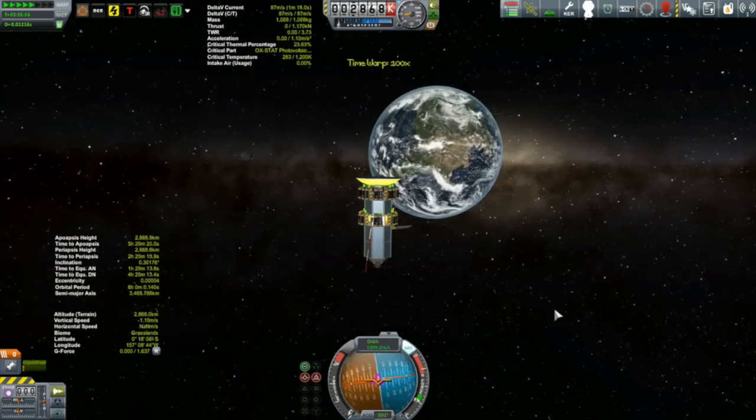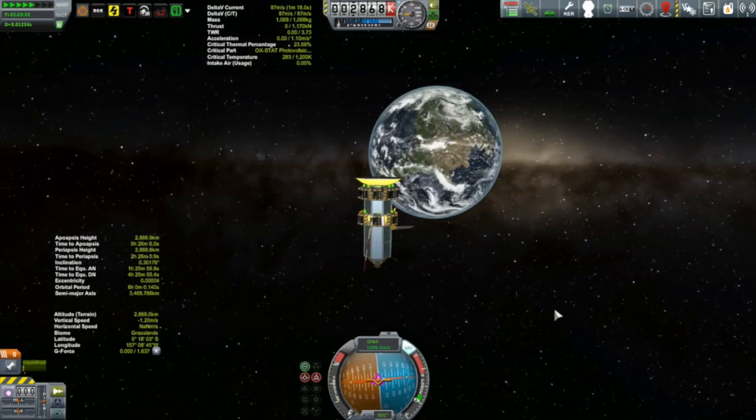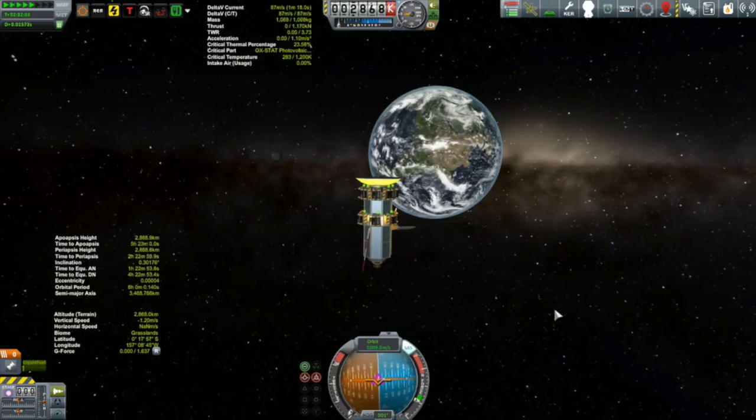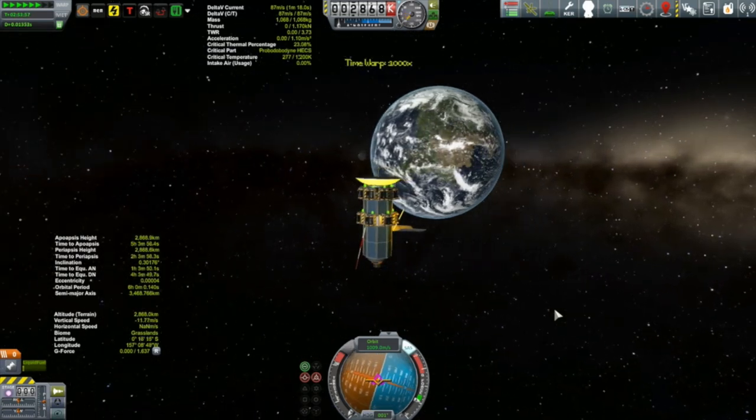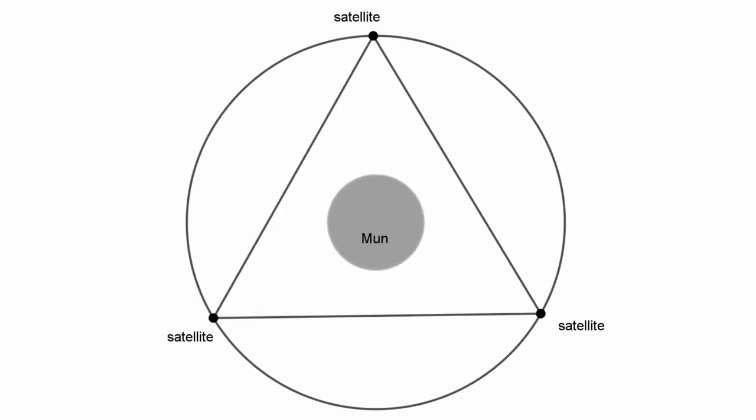Besides, synchronous orbits around some bodies, including the moon, aren't even possible as the altitude of the required orbit lies outside of that body's sphere of influence. We're going to be building the simplest network that still provides full coverage, and that would be three relays equally spaced in identical orbits, thus forming an equilateral triangle. We'll start by setting a lower and upper bound on the altitude of this orbit, and then we'll dial it in to the ideal altitude.